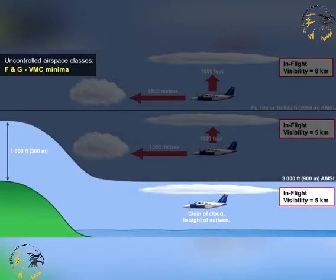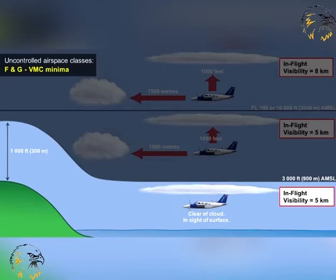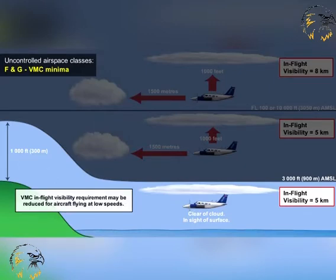Finally, in uncontrolled airspace, we must look at the airspace from the surface up to 3,000 feet above mean sea level, or up to 1,000 feet above terrain, whichever is the higher. In this lower band of airspace, a pilot is flying in VMC if he is clear of cloud, in sight of the surface, and has an in-flight visibility of 5 km. In some ICAO signatory states, the in-flight visibility required in this lower band may be reduced to below 5 km by the National Aviation Authority if an aircraft's airspeed does not exceed a given maximum value.